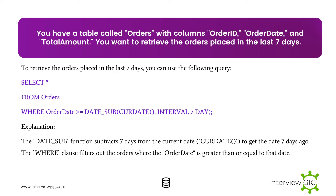Next Scenario: You have a table called Orders with columns Order ID, Order Date, and Total Amount. You want to retrieve the orders placed in the last 7 days. To do this, you can use the following query. The DATE_SUB function subtracts 7 days from the current date using CURDATE() to get the date 7 days ago. The WHERE clause filters out orders where the order date is greater than or equal to that date.